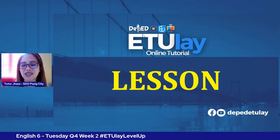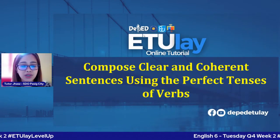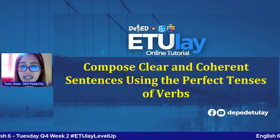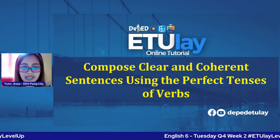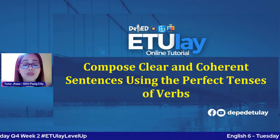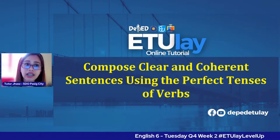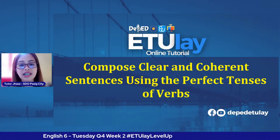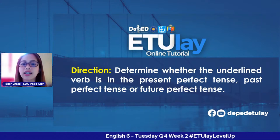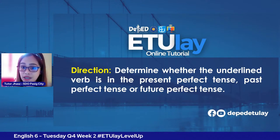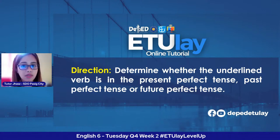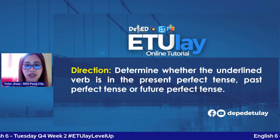Let's now proceed to our lesson on how to compose clear and coherent sentences using the perfect tenses of the verb. For this activity, determine whether the underlined verb is in the present perfect tense, past perfect tense, or future perfect tense. Comment your answer: present perfect, past perfect, or future perfect. Ready? Let's do it.